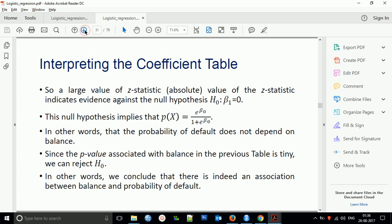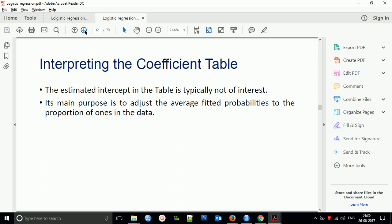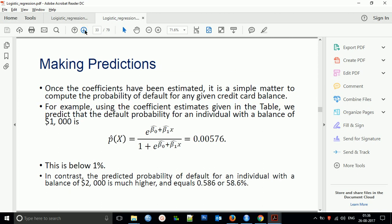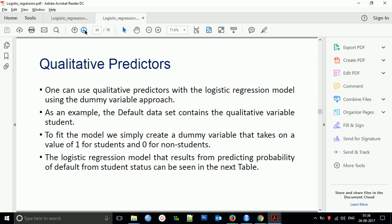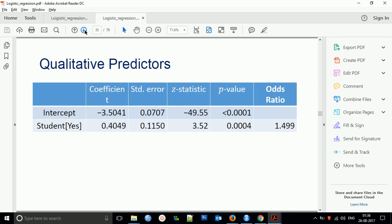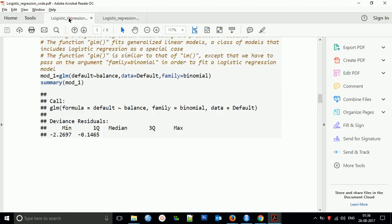How to interpret the coefficient table: the estimated intercept in the table is typically not of interest. Its main purpose is to adjust the average fitted probability to equal the proportion in the data.